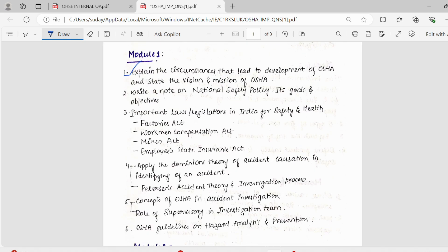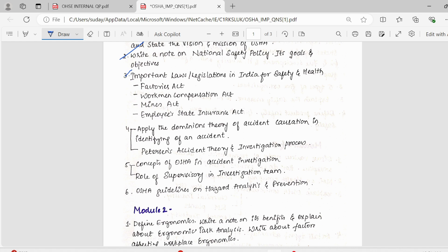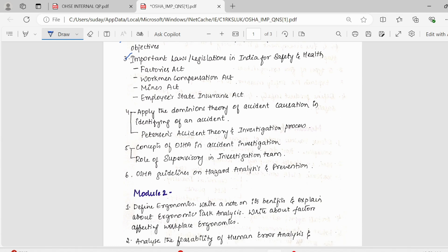In the first module, first topic we have is circumstances that lead to development of OSHA, vision and mission of OSHA. This is a must question. Moving on next, we have National Safety Policy, what are its goals and objectives? Again, important topic. Next, we have important laws and legislations in India for safety and health. Not just these four, there are nearly eight or ten laws. Make sure you know about these laws properly. What were the conditions before these laws came into existence? And how did these laws bring relief to the people working in those industries? You should know about these two things and you have to elaborate properly.